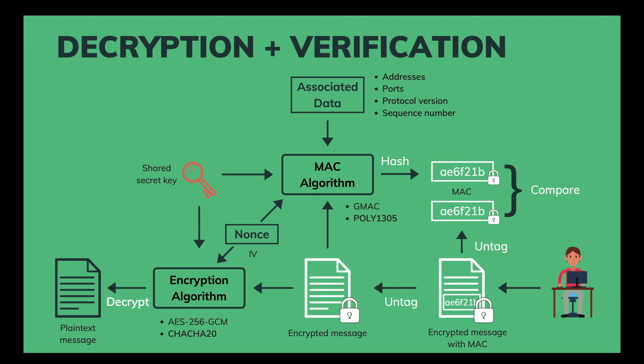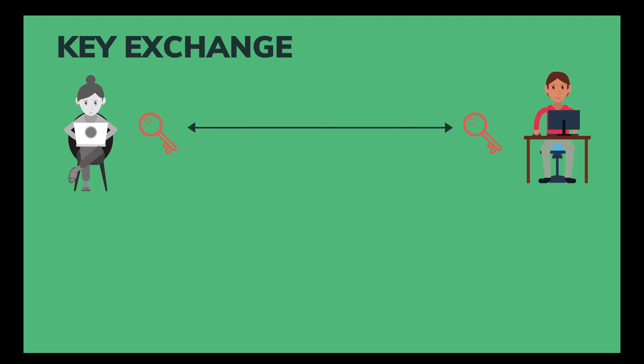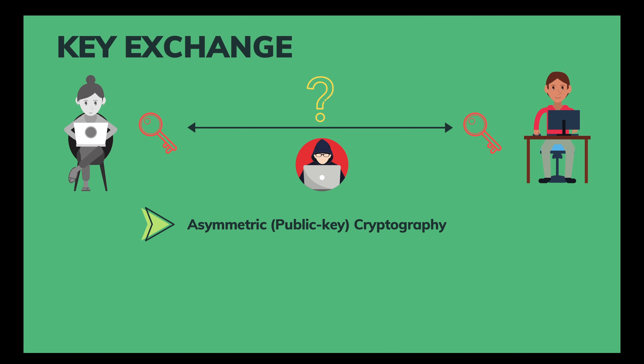However, there's one question: how do Bob and Alice share the secret key with each other without leaking it to the public? The answer is they need to use asymmetric or public key cryptography for that purpose. Specifically, they can use either Diffie-Hellman ephemeral or Elliptic Curve Diffie-Hellman ephemeral.